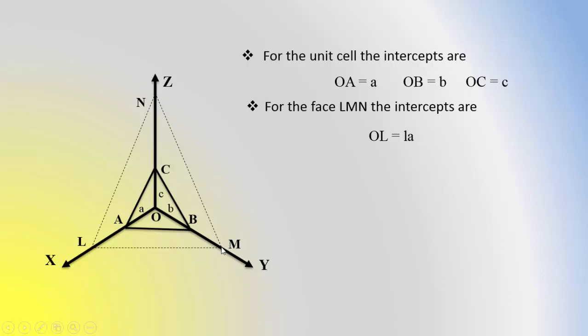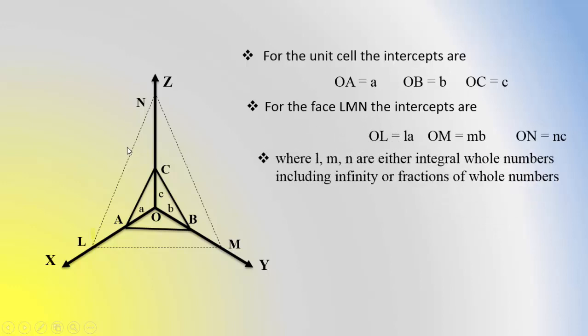For intercept at point M, it is OM equals M times B. At point N, it is ON equals N times C.